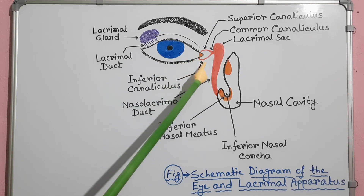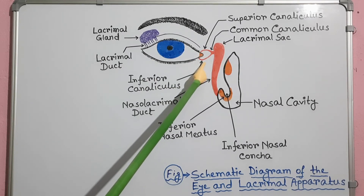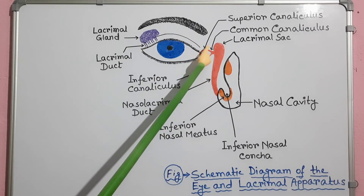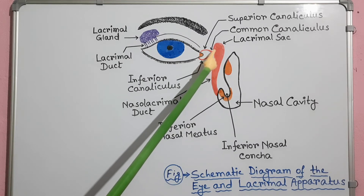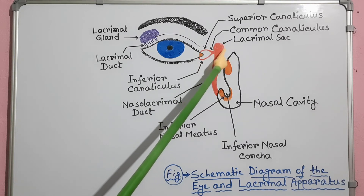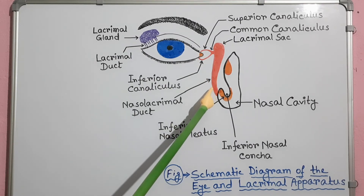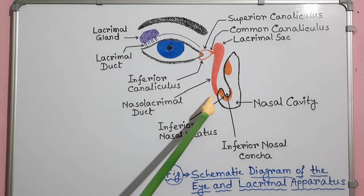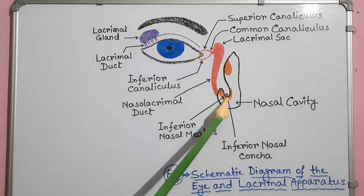Excess tears are collected in the medial corner of the eye by small tubes known as the lacrimal canaliculi — the superior canaliculus and the inferior canaliculus. These two canaliculi join to form the common canaliculus, which then opens into the lacrimal sac. The sac is continuous with the nasolacrimal duct, which opens into the inferior meatus of the nasal cavity beneath the inferior nasal concha.